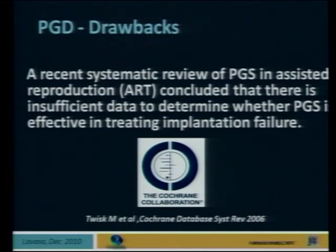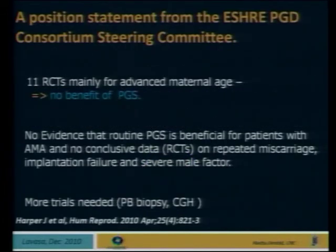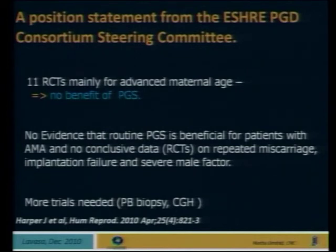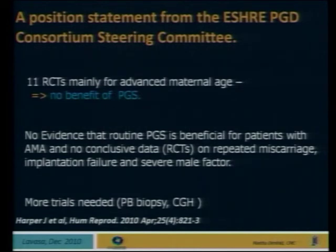A recent systematic review of PGS in assisted reproduction concluded that there is insufficient data to determine whether PGS is an effective treatment for implantation failure. A position statement from the ESHRE PGD Consortium Steering Committee, which included 11 RCTs mainly for advanced maternal age, found no evidence that it is efficient in patients with advanced maternal age. We need more studies on the efficiency of PGS in failed IVF. From personal experience, most patients coming with five, six, or seven failed cycles are poor responders who don't have eight or ten eggs — and PGS requires at least eight good eggs to have an embryo available for transfer.